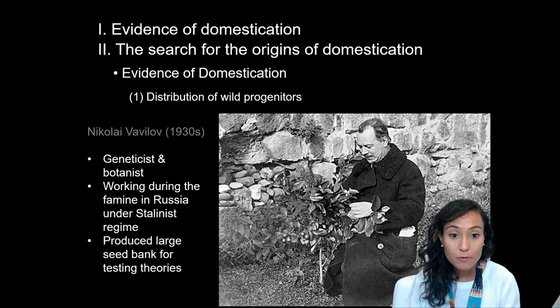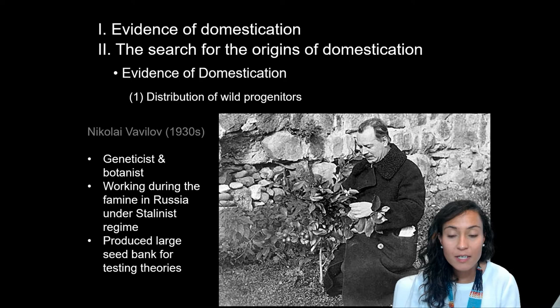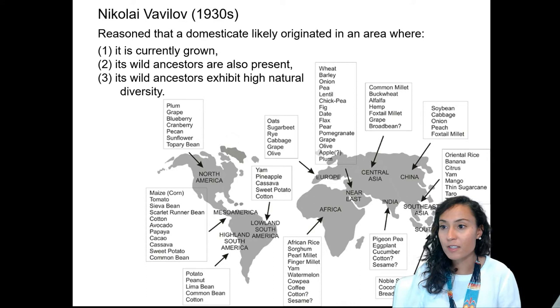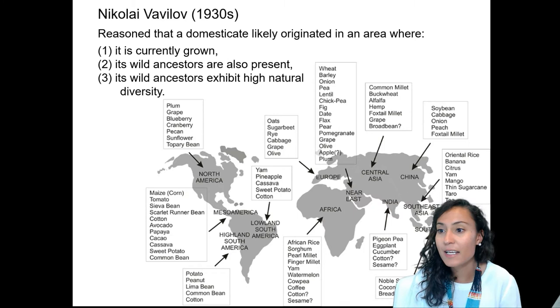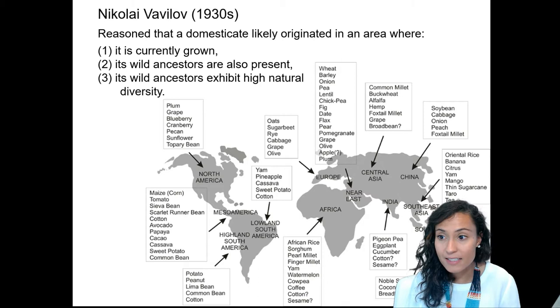There are many lines of evidence archaeologists use to document these simultaneous domestication efforts. Mapping the distribution of wild progenitors is one strategy developed by Nikolai Vavilov, a Russian botanist and geneticist. Vavilov sought to study the history of domestication to address famine in Stalinist Russia, creating a massive seed bank that Hitler actually attempted to steal. His key insight was that a domesticate likely originated where it currently grows naturally, its wild ancestors are present, and those ancestors exhibit high natural diversity.